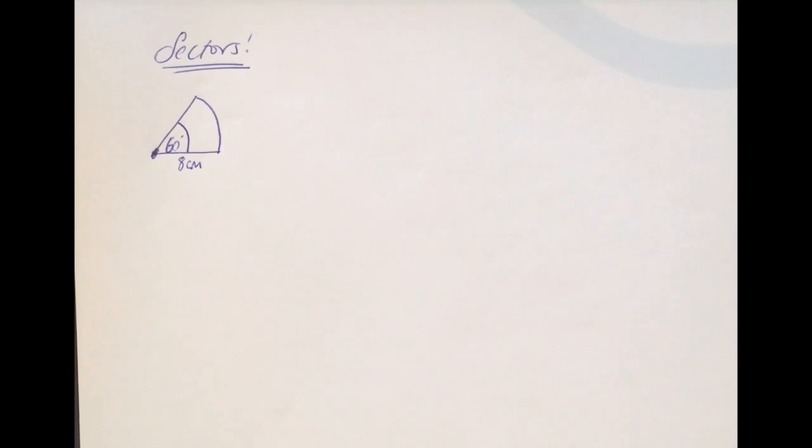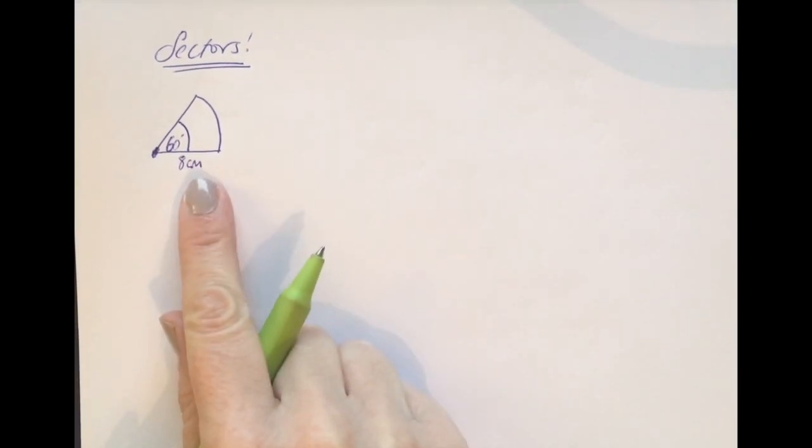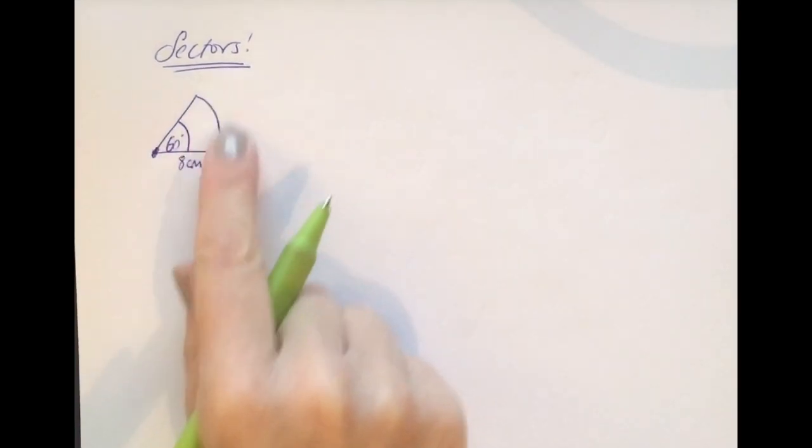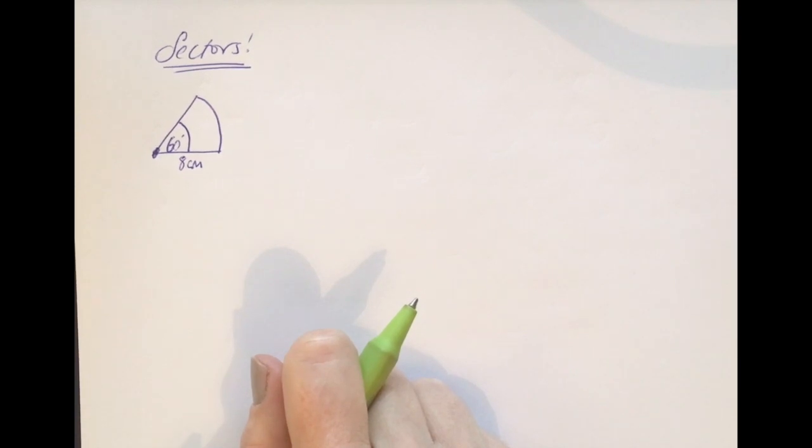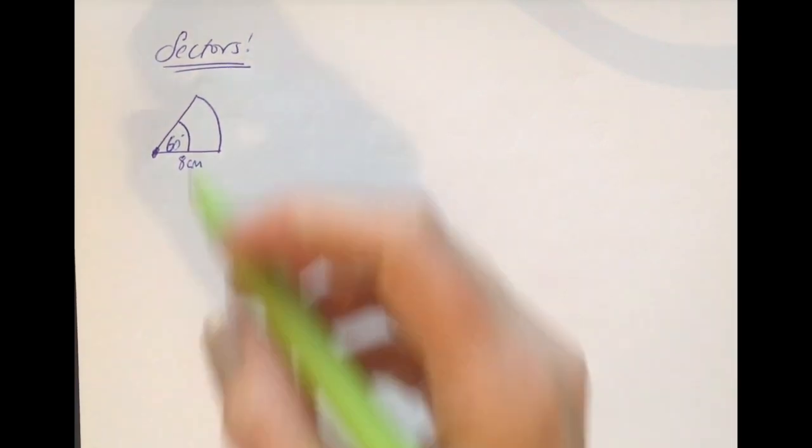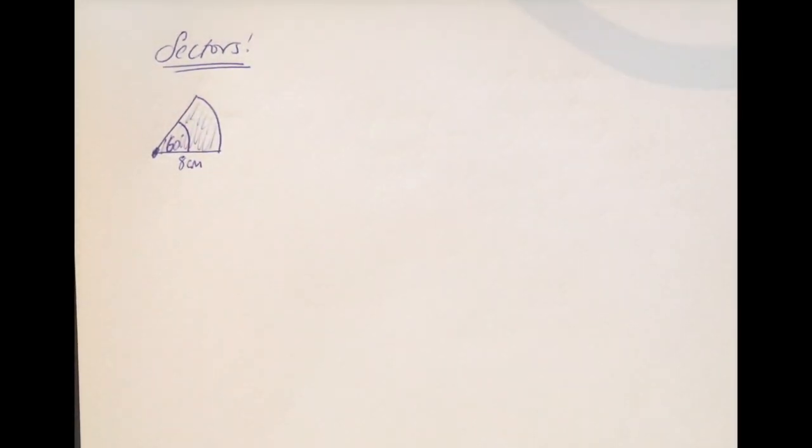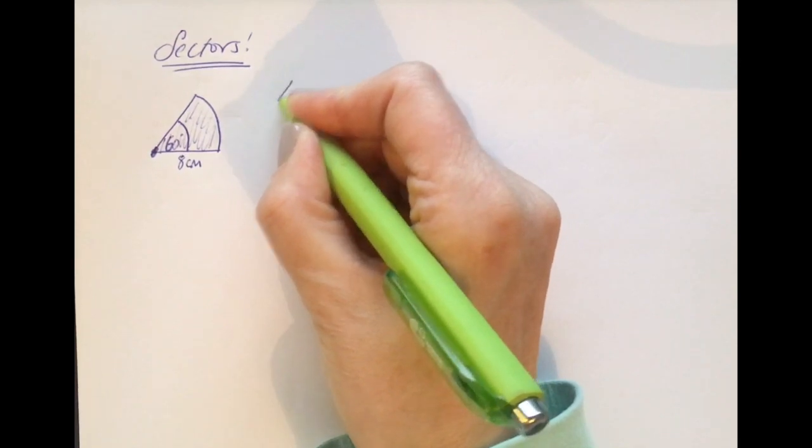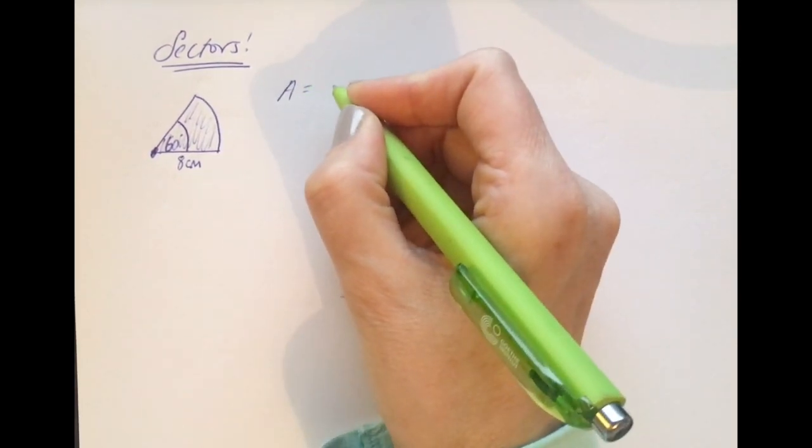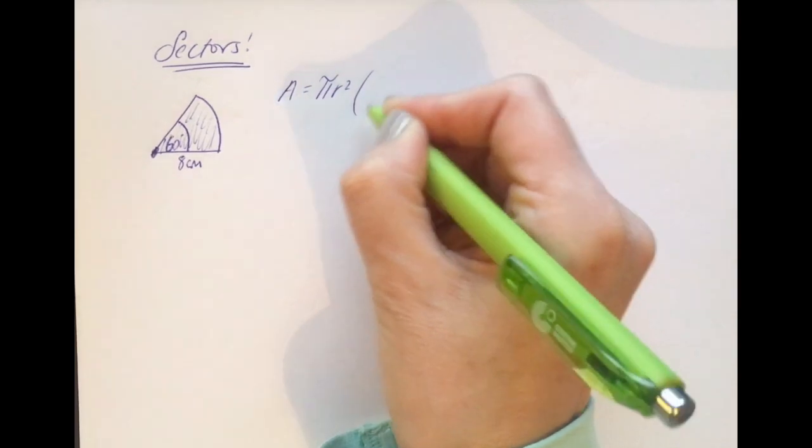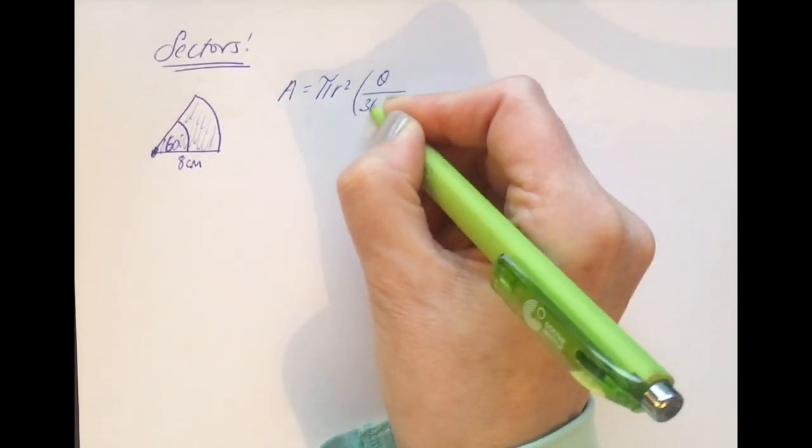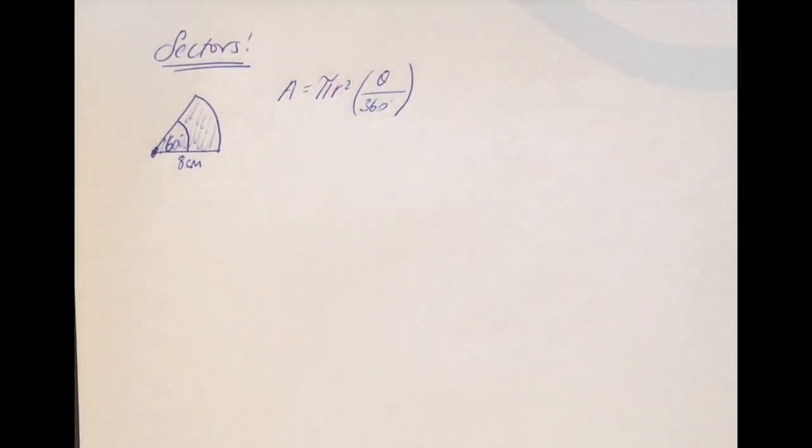So let's take a look at an example. So here we have a pizza slice, and the first thing we're going to do is find the area of that sector. So the shape, the area of the inside of that shape. So take down the formula from the log tables exactly as you see it. Now it looks harder than it is. Remember, the calculator is going to do a lot of the work for us.